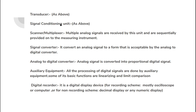Transducer and signal conditioning units are the same as in the analog system. The signal scanner or multiplexer handles the case when a lot of analog signals are coming in — it sequentially passes those signals one by one to the measuring instrument. Next, the signal converter converts the analog signal into a form that is acceptable by the analog-to-digital converter.